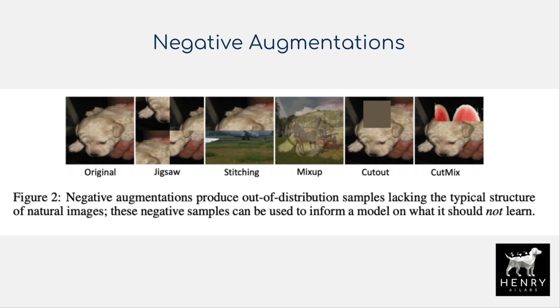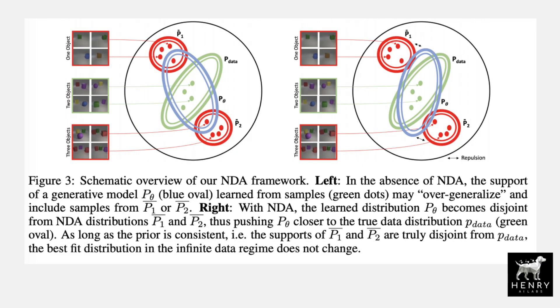Data augmentation is usually used to form new examples that share the same class label as the original instance. However, we also know of data augmentations that either corrupt the class label or push the image to be out of the distribution of natural images. An example is the jigsaw augmentation, where you patch up an image and scramble the patches, destroying the global structure. This paper explores these kinds of augmentations, termed negative data augmentations, and sees how we can integrate them into our training loops to make use of these priors.